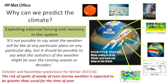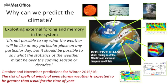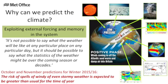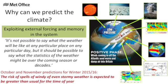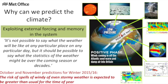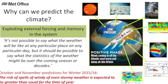If you can't forecast the weather more than a week ahead, how can you predict the climate? The answer is that here we're exploiting the external forcing — which might be the sun, a volcano, or greenhouse gas increases — and the memory in the system, which lies particularly within the ocean and ocean circulation. It's not possible to say what the weather will be on any particular day, but it should be possible to say what the statistics of the weather might be over the coming season or decades.